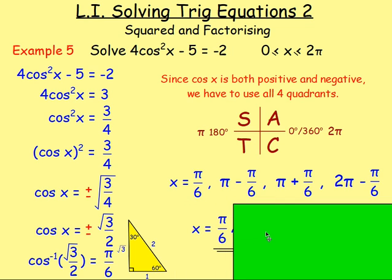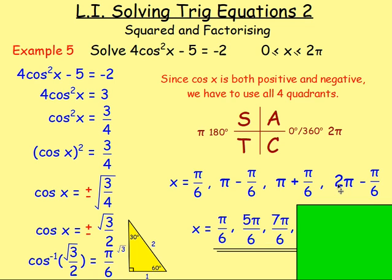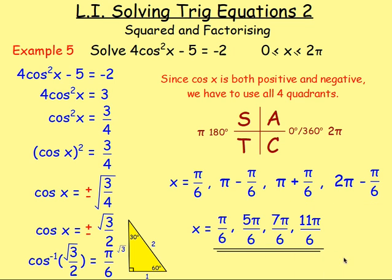Simplifying: pi over six stays as pi over six. For pi minus pi over six, put pi into sixths: six pi over six minus one pi over six equals five pi over six. For pi plus pi over six: six pi over six plus one pi over six equals seven pi over six. For two pi minus pi over six: two pi is twelve pi over six, minus one pi over six equals eleven pi over six.